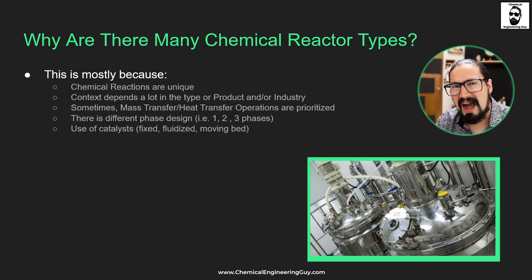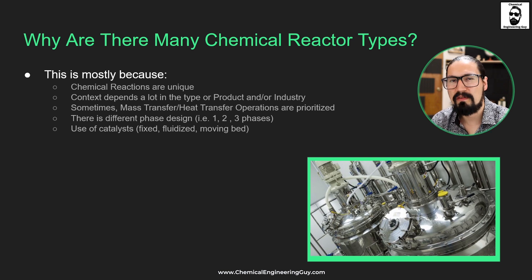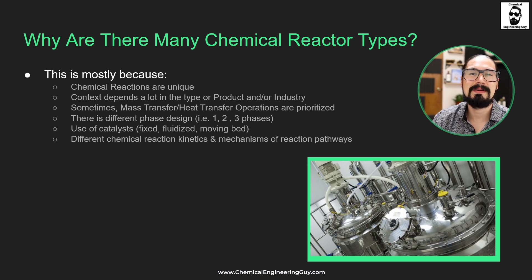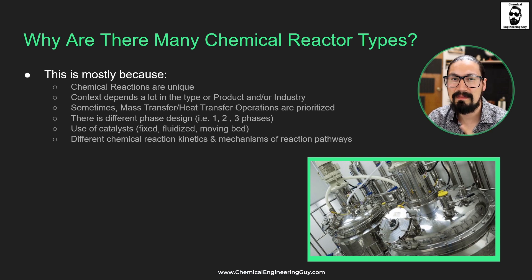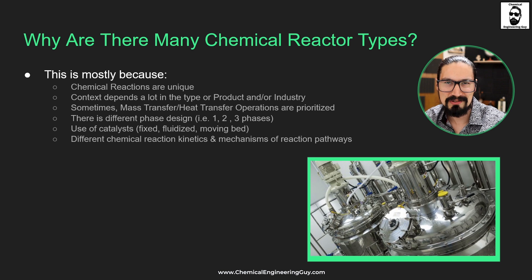Another question that arises is: are we going to use a catalyst? How will that catalyst be placed, how will it interact with reactants and products, and how will we recover it? This must be considered and it will affect the final reactor type. Due to the nature of reactants or final products, reaction mechanisms and pathways can be very complicated, and certain reactor types will favor certain pathways while others will not.